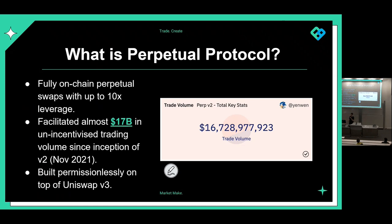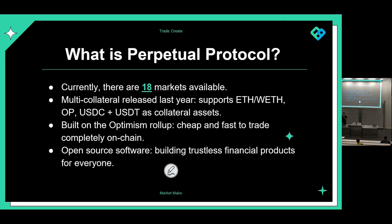So what is Perpetual Protocol? We offer fully on-chain perpetual swaps with up to 10x leverage. Since the inception of version 2 in November 2021, we've facilitated almost 17 billion dollars in unincentivized trading volume — around 16.7 billion in all-time trading volume. Perpetual Protocol is built permissionlessly on top of Uniswap V3, functioning very similarly except there's also leverage. Currently there are 18 different markets available.